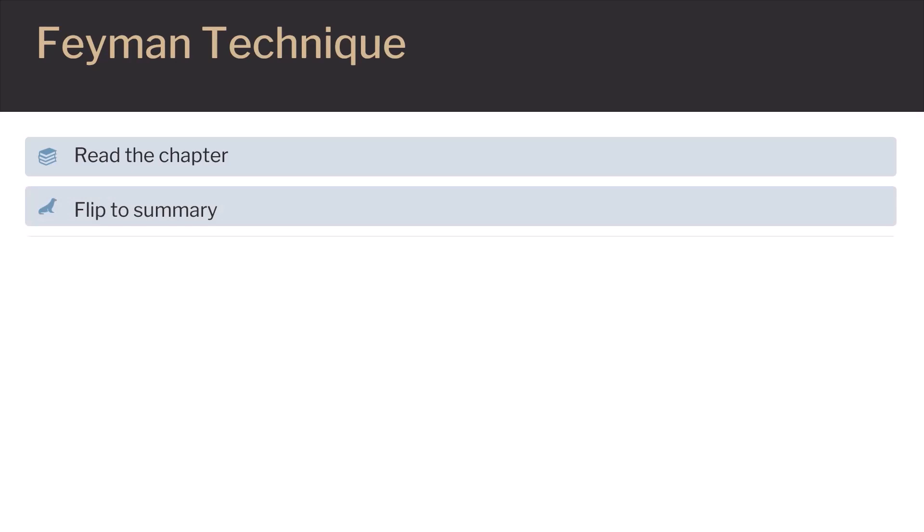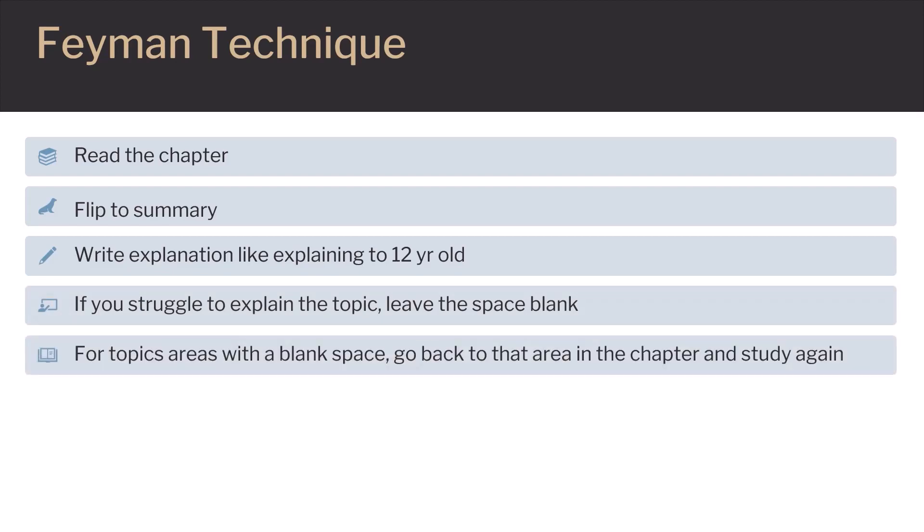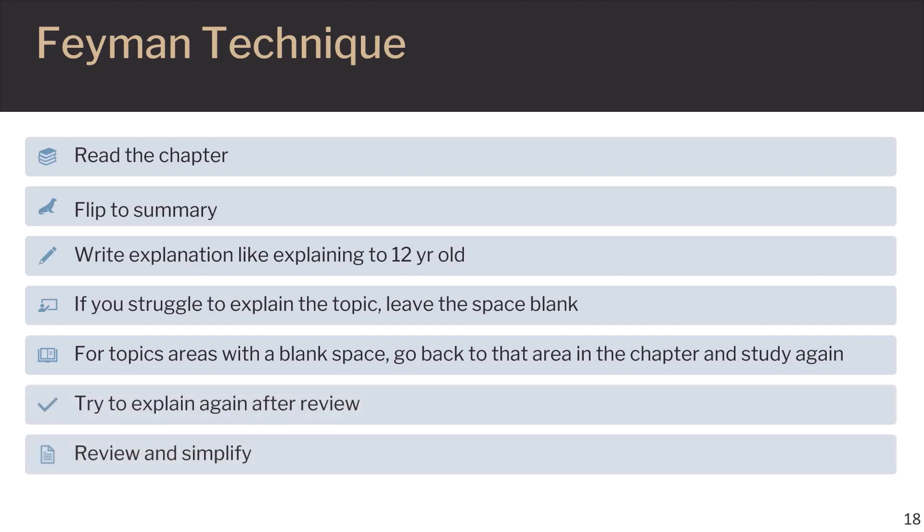The last tip is to use the Feynman technique when trying to learn a new topic in the course. With this technique, you begin by reading the chapter. Once the chapter is read, flip back to the summary and write down the main concepts in the chapter. Leave space as you write down each concept. In the space you left for each concept, write out an explanation and write this as if you are trying to explain it to a 12-year-old. Why? When you can explain a topic in simple terms like you would to a 12-year-old is when you have an understanding of that topic. If there is a topic you are struggling to explain, leave it blank. For those topics that are blank, go back into the chapter and study them again, and maybe watch a video online about that topic. Once you have gone back and looked that topic over, try again to write down an explanation. Once you have all the explanations in place, review them out loud. If you feel they are too confusing, go back and reword. Once you are comfortable with your explanations, you can try them out on others to see if you can answer their questions and if they understand the concepts as well.